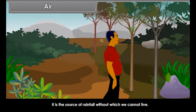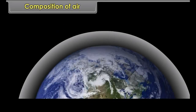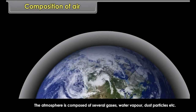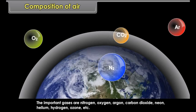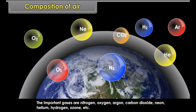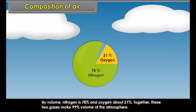Water vapour is the source of rainfall without which we cannot live. The atmosphere is composed of several gases, water vapour, dust particles, etc. The important gases are nitrogen, oxygen, argon, carbon dioxide, neon, helium, hydrogen, ozone, etc. By volume, nitrogen is 78% and oxygen about 21%. Together, these two gases make 99% of the volume of the atmosphere.